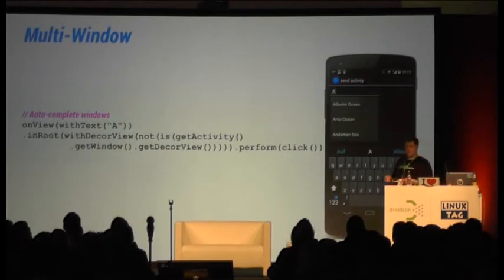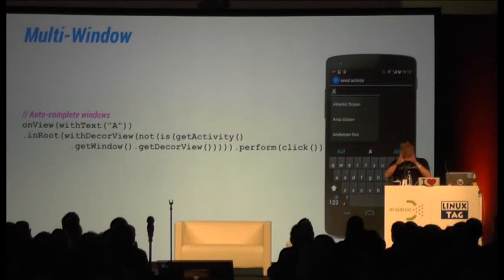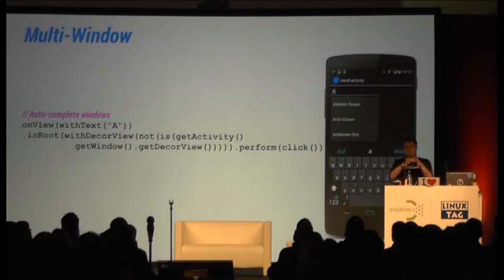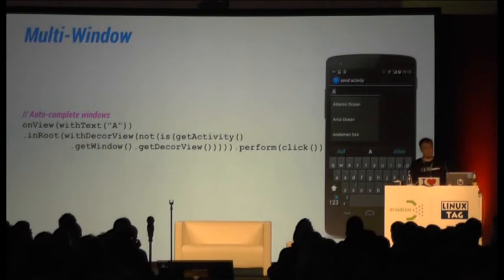The most important thing recently added is the ability to switch between windows. Before, one problem with instrumentation tests was that you could only make assertions on views in your actual window — for example, with an autocomplete search box it was not possible to change window and then click something in the other window. With Espresso 1.1 you can now do that.